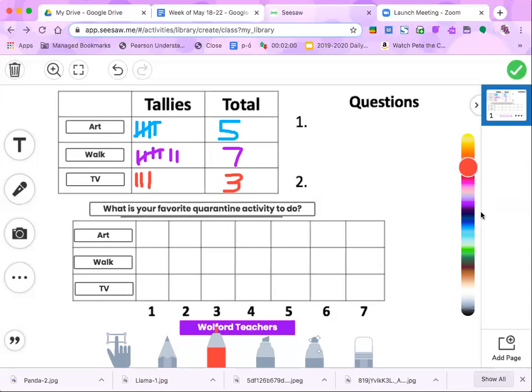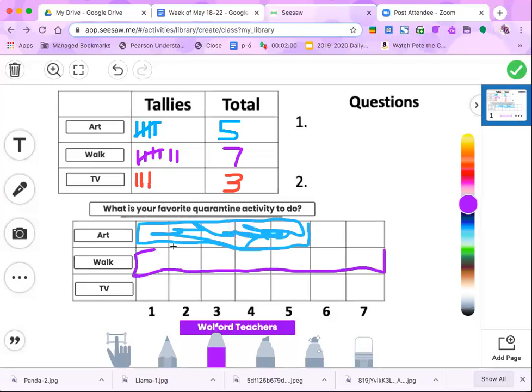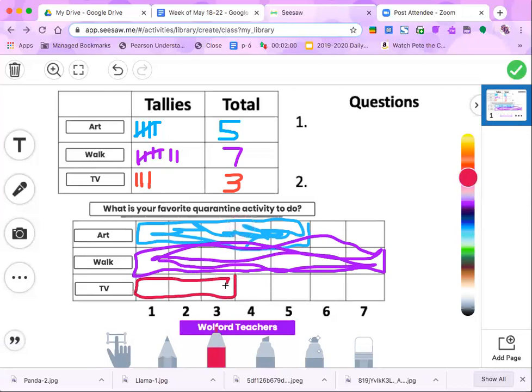And now I'm going to go ahead and fill in my data. So art is five. So looking at five, I'm going to start at the five box and go all the way down. Kind of fill it in just a little bit. And then walking was seven. So that took up my entire graph all the way at the top. And there we go. And then TV was only three. Okay. Now I have filled in my graph.